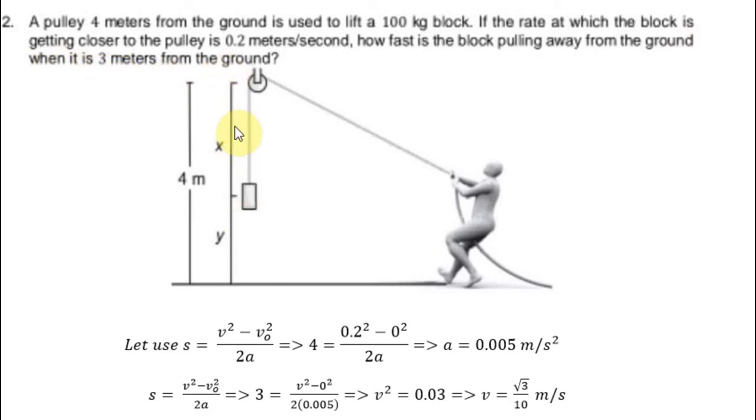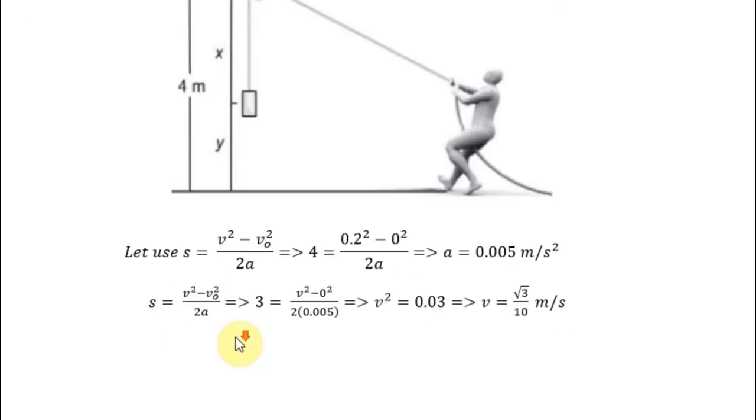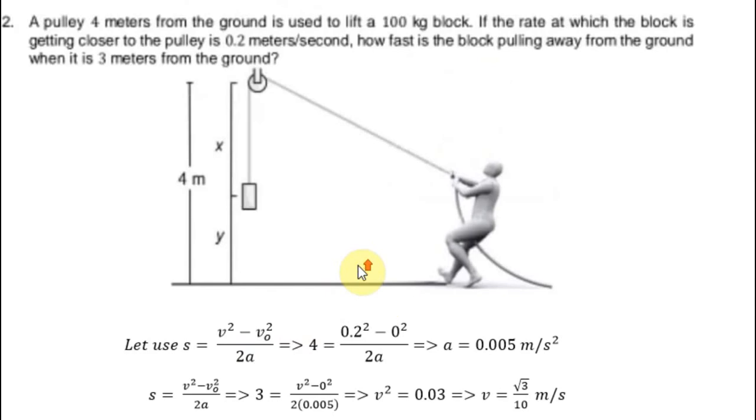We will apply the formula s = (v² - v₀²) / 2a, where s is the distance. We have s = 4 meters, the distance from the ground to the pulley.